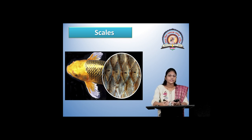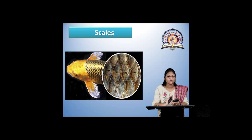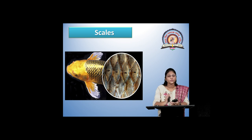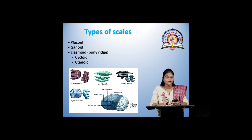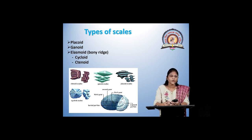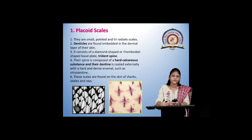The next organ seen in fish is scales. Scales are important because they cover the body of fishes. They are a protective organ which protects the fish body from tearing by friction with water. There are various types of scales: placoid, ganoid, and elasmoid. Elasmoid scales have bony ridges that are attached to the skin of fishes. There are two types of elasmoid: cycloid and ctenoid.